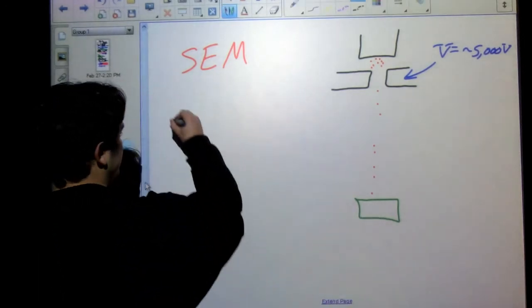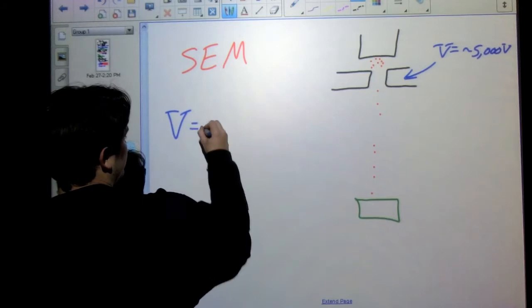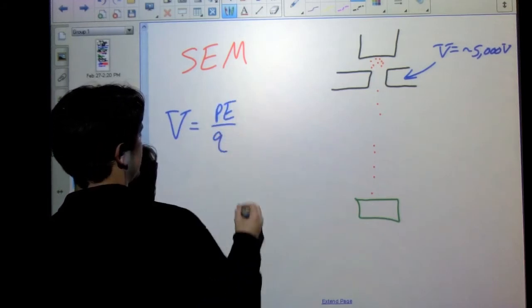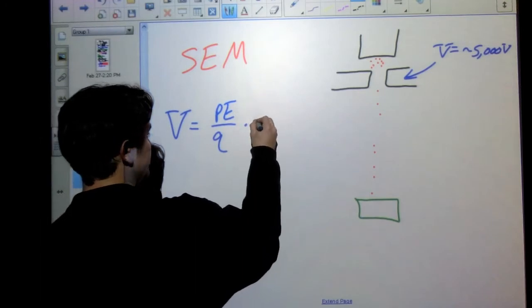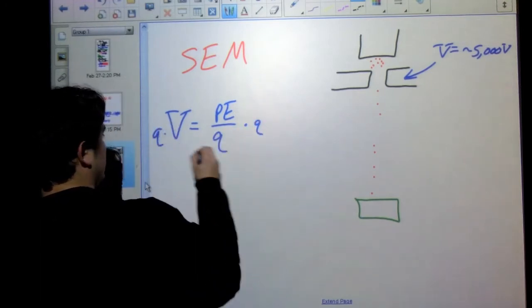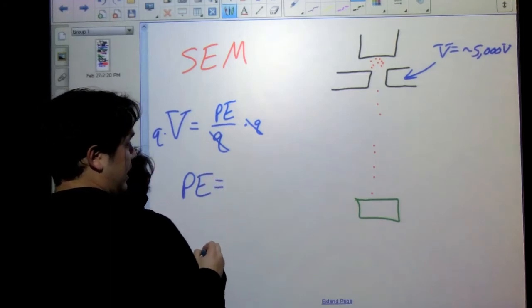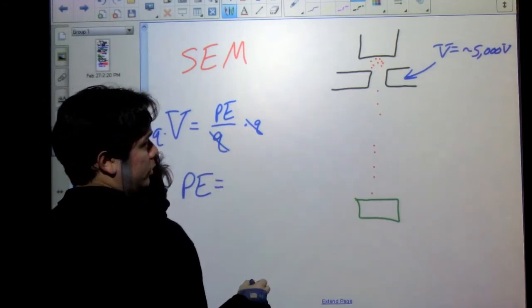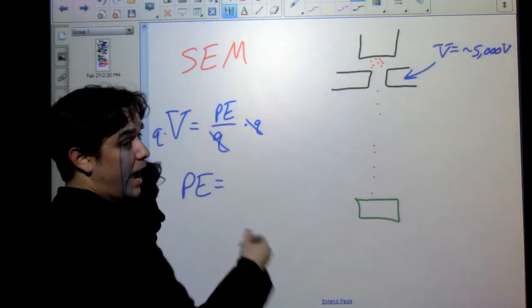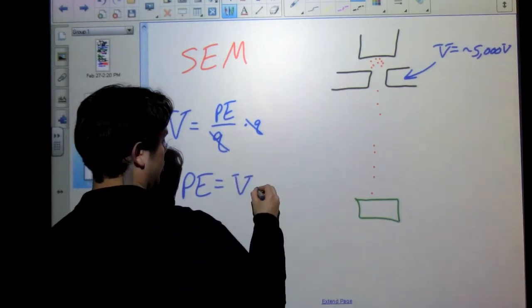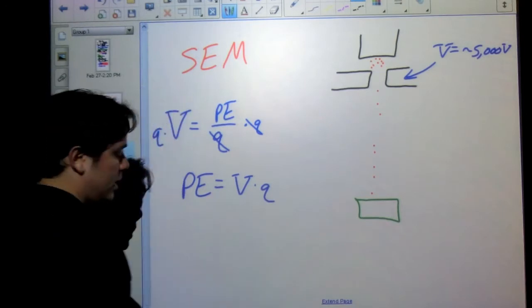The biggest thing that we are going to do right now though, because this is a good example of how we can use voltages and understand the types of energies we get. We know that for a voltage, a potential, electric potential, that's equal to our potential energy divided by our charge. So if I multiply both sides by my charge, I find that my potential energy, the energy that I gain from moving a charged particle through a voltage difference, a potential difference, is nothing more than we take that potential and we multiply it by our charge.